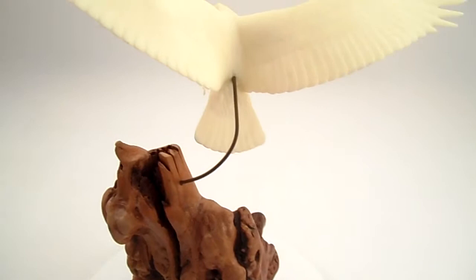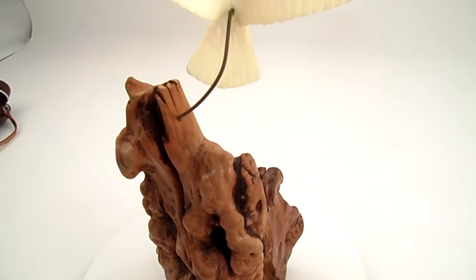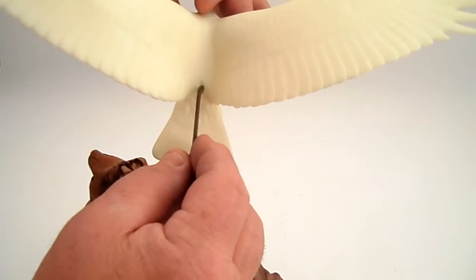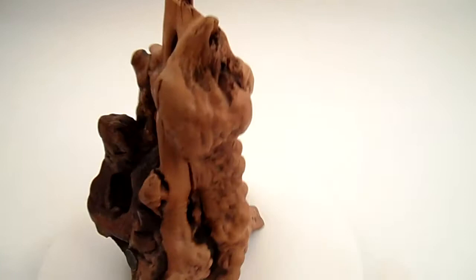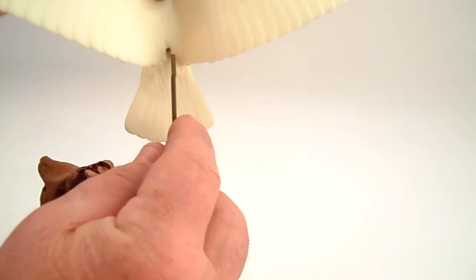If you ever decide to clean it and it gets real dusty, just remove the eagle and rinse it down with cold water and put it back on. It's pretty easily done, just a little jiggle there and it's off. Once it gets locked in there, you got to kind of jiggle it.